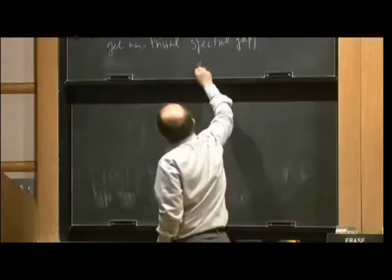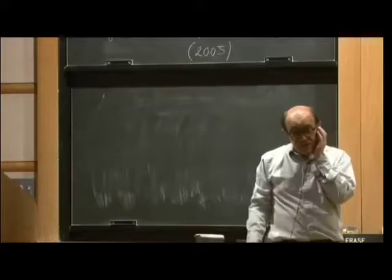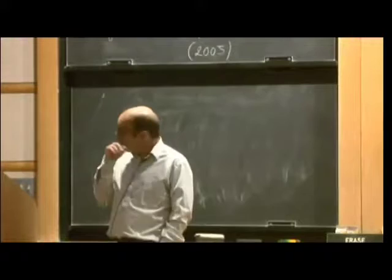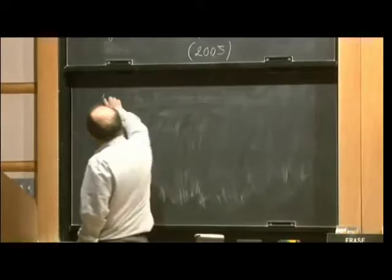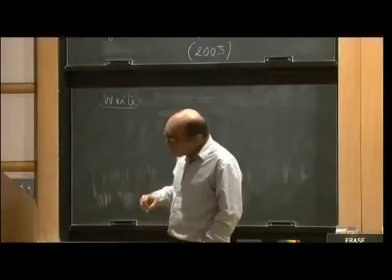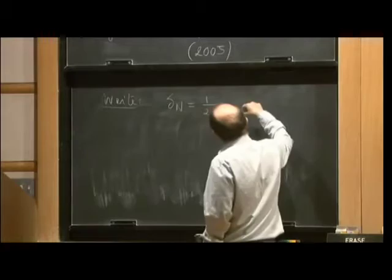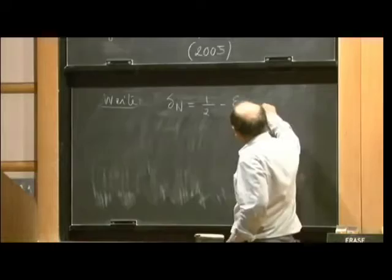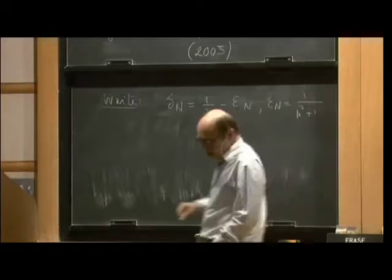So the precise statement here, and how it should be attacked using Arthur, was explained in our book in 2005. So I'm going to write delta n for the following symbol. It's one-half minus epsilon n, and epsilon n is one over n to the square plus one.